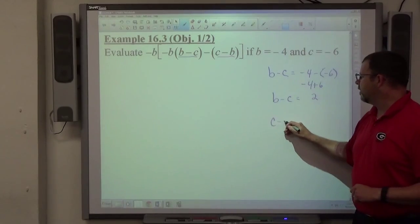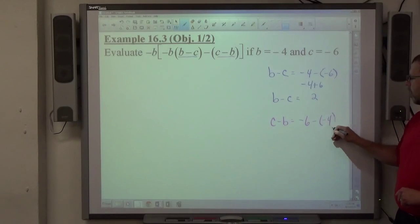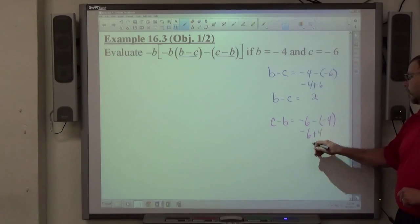And c minus b, if I do that one, it's going to be negative 6 minus negative 4, which is negative 6 plus 4, which equals negative 2.